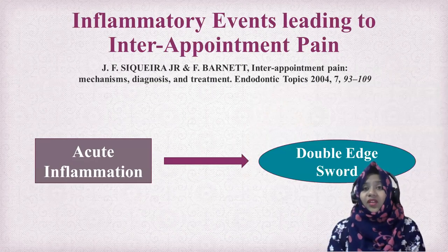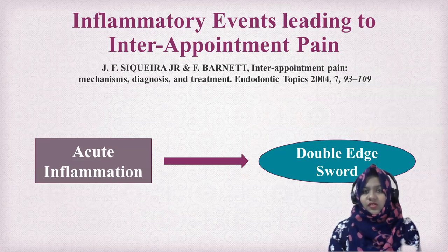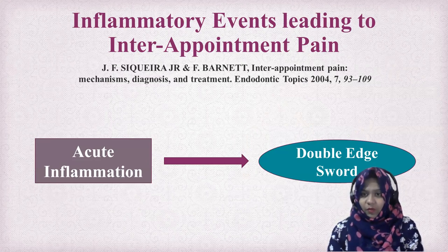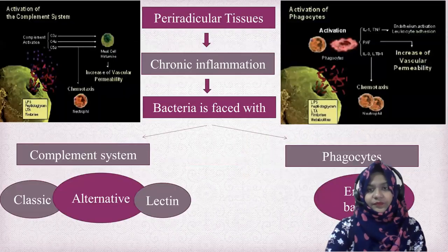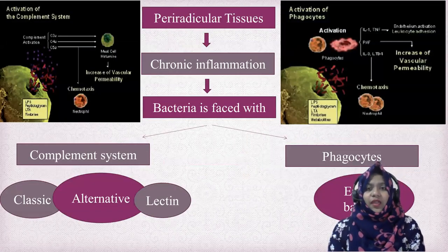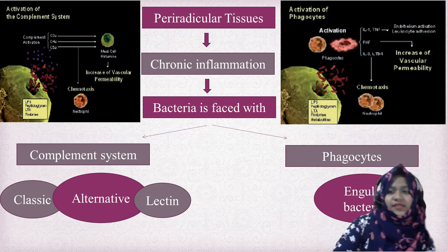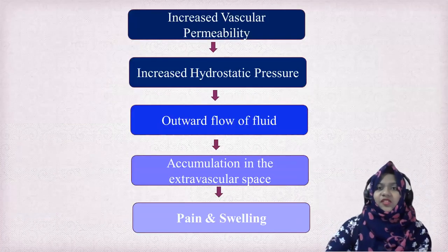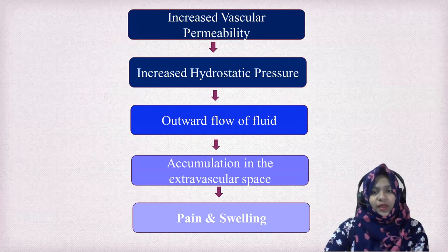What are the important events that lead to inter-appointment flare-up? The main factor is acute inflammation, which is a double-edged sword — it protects the body from infections, but when inflammatory products are excessive, it also causes damage to the body. When periradicular tissues are in chronic inflammation, bacteria face the complement system — classic, alternative, and lectin pathways. These systems activate and phagocytes engulf the bacteria. This leads to increased vascular permeability, increased hydrostatic pressure, outflow of fluid, accumulation in the extravascular space, leading to pain and swelling.